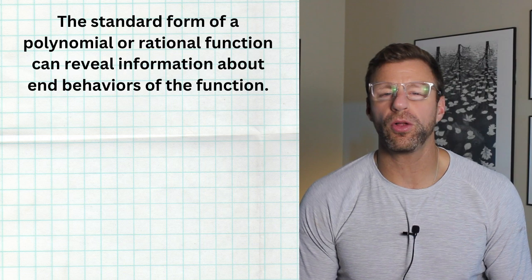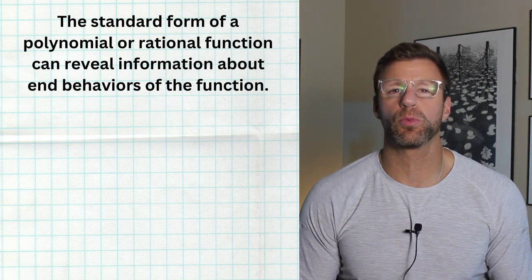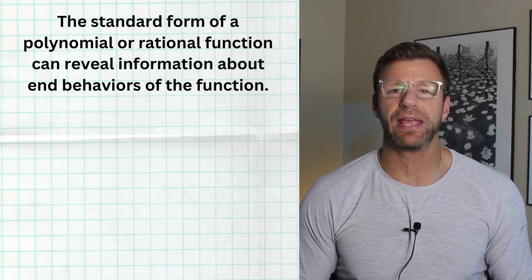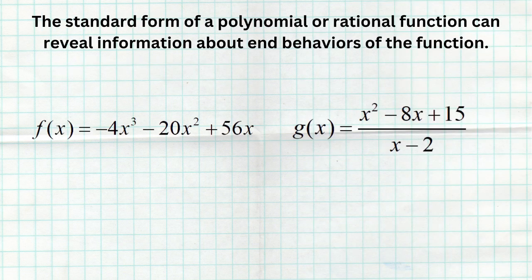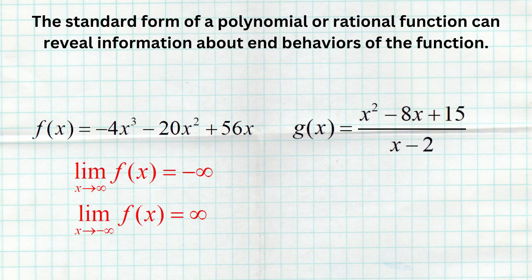The standard form of a polynomial or a rational function gives us really good insight into the end behavior of that function. For example, we could look at this polynomial f(x) = -4x³ - 20x² + 56x and we could look at the degree being odd and the leading coefficient being negative. That tells us the right end behavior goes towards negative infinity and the left end behavior goes towards positive infinity — all information from topic 1.6 about end behavior.